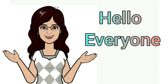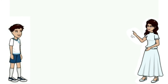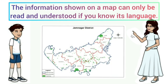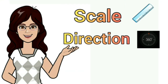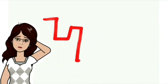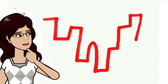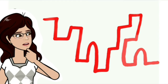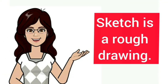Are you ready to find out the difference between map, sketch, and plan? The information shown on a map can only be read and understood if you know its language, which includes scale, direction, and symbols. But if we don't use scale, direction, and symbols on a drawing, it will not be called a map — such a drawing is known as a sketch. In other words, a sketch is a rough drawing.